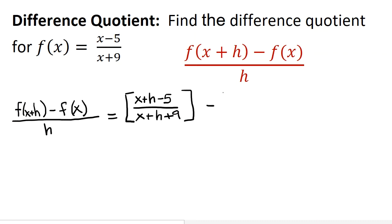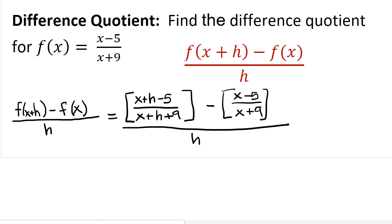And now we're going to subtract just f of x, so we have x minus 5 all over x plus 9, and the whole thing is all over h. So what we have here is a complex fraction.